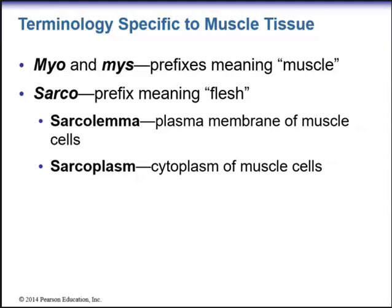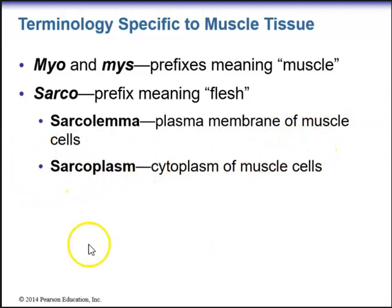Now let's go over terminology specific to muscle tissue. The prefixes 'myo' or 'mys' mean muscle. 'Sarco' is another prefix pertaining to muscle tissue, meaning flesh. Muscle tissue has specific organelles that relate to generalized cell organelles. The sarcolemma is the plasma membrane of muscle cells, and sarcoplasm is the cytoplasm of muscle cells.